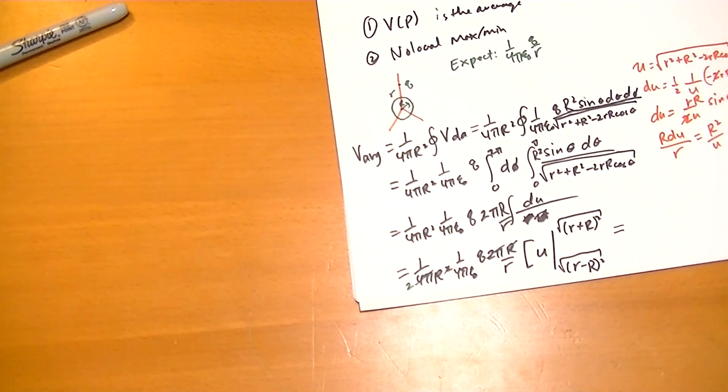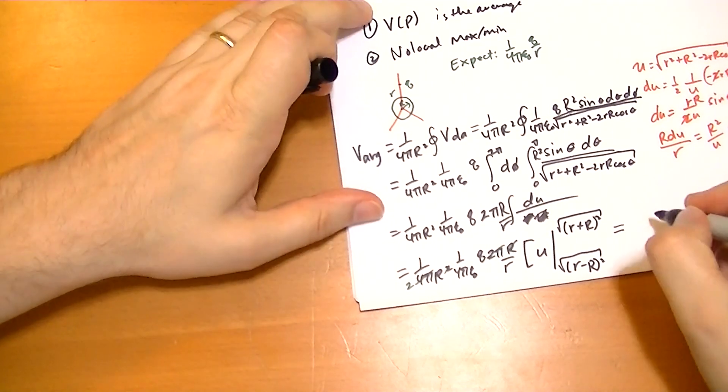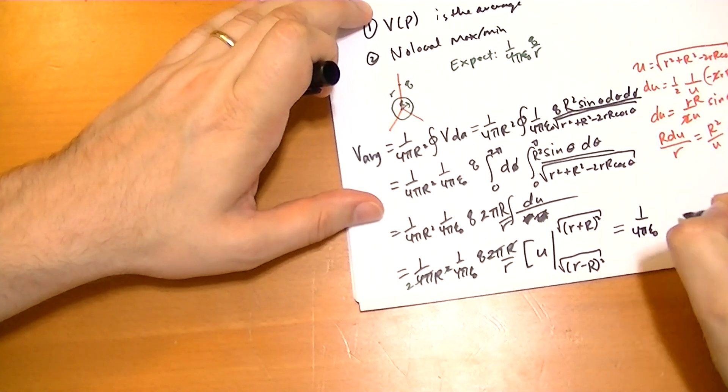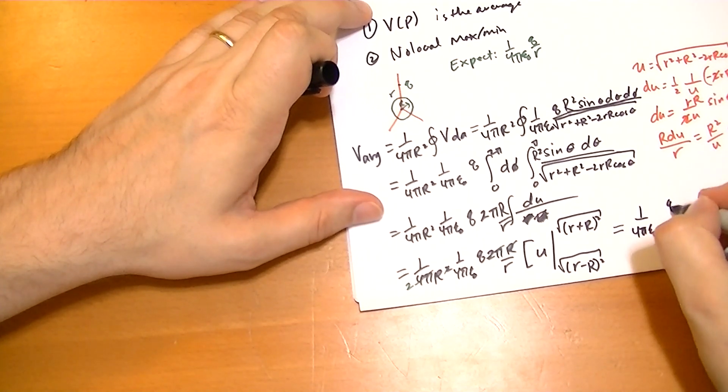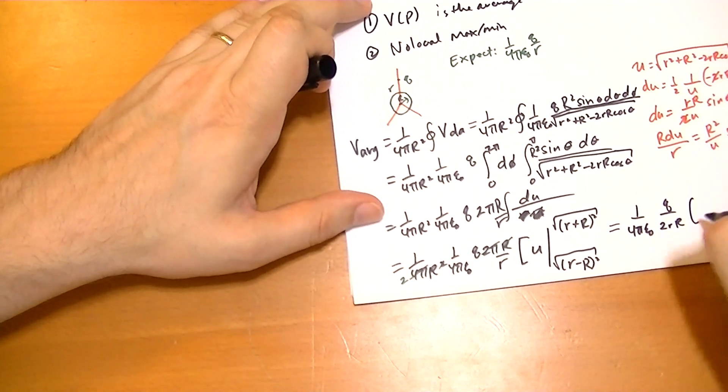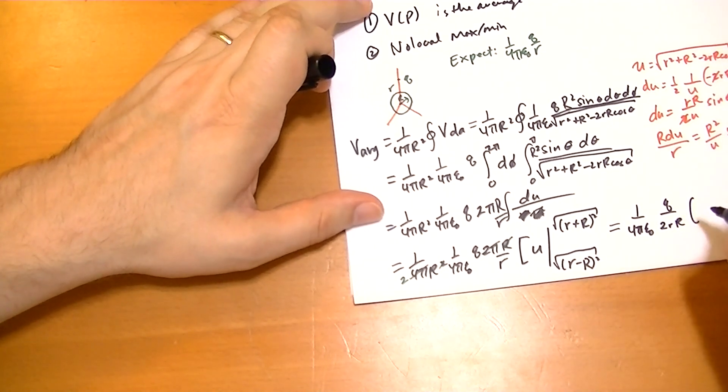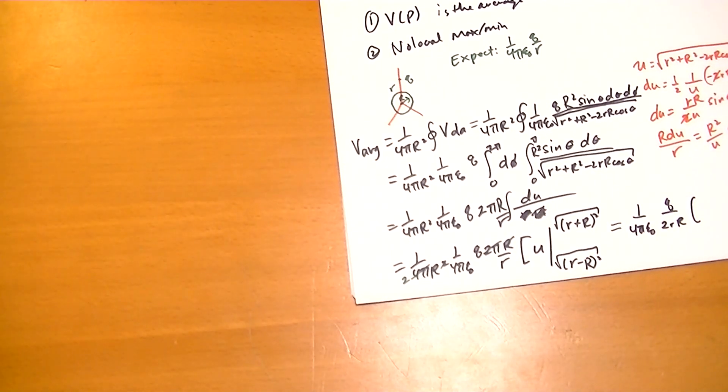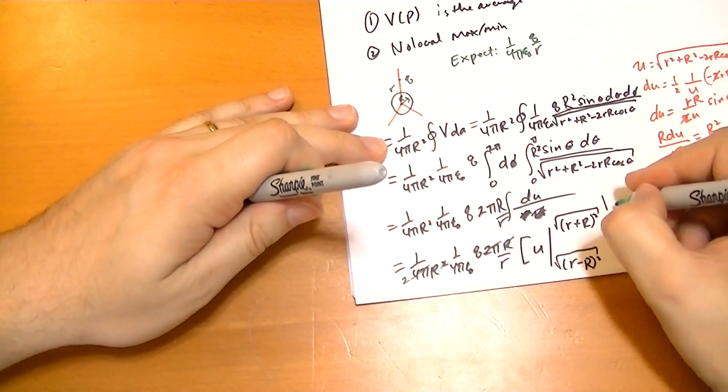So this inside bit here. So we have 1 over 4 pi epsilon naught q over 2rR. And then we have the square root of this. Now, I forgot to tell you this, but the square root of a square is equal to the absolute value.